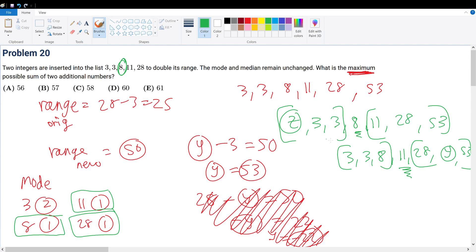So this z must be less than or equal to 8. Why can it also be 8? If it's 8, then that becomes 3, 3, 8, 8, 11, 28, 53. So if that were the case, what is the median? Well, that's my left bound. That's my right bound. Wait a minute. The median is still 8. So 8 plus 53 is 61.